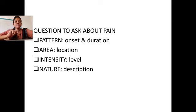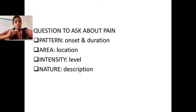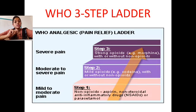PQR is completed. Next, S stands for the pattern of pain — the onset, duration, area, and intensity, whether mild, moderate, or severe. T refers to the nature of the pain. We ask the patient questions to assist assessment using the PQRST format.